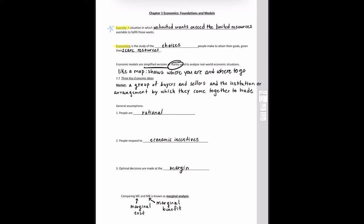Let's move on and talk about the three key economic ideas. Economic agents, they interact with each other in what are called markets. A market is a group of buyers and sellers and the institution or arrangement by which they come together to trade. There are a lot of different examples of markets.